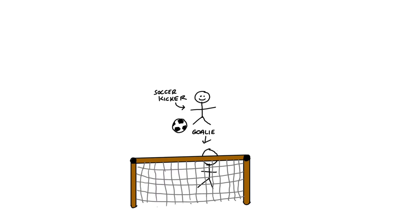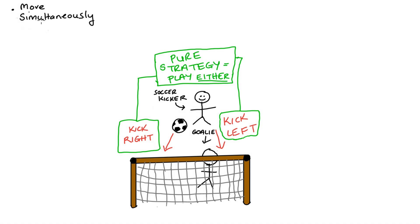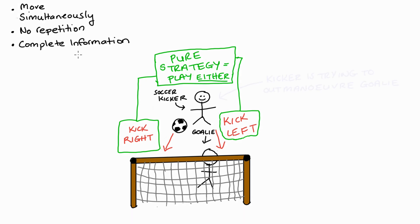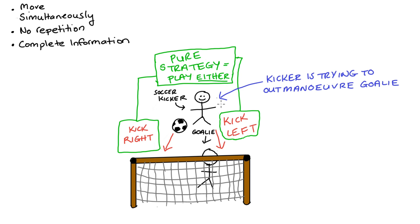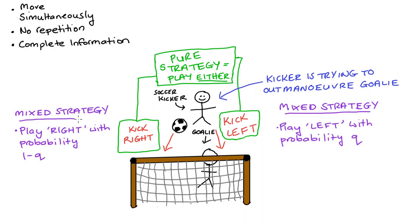To motivate mixed strategies, let's imagine you are a soccer player kicking a ball toward a net where there is a goalie. In a very simple model, we can model our kicker as having two pure strategies: kick to the left or kick to the right. Our players are choosing simultaneously in a one-shot game with complete information. The whole point of the interaction between the kicker and the goalie is that the kicker is trying to outmaneuver the goalie — to kick in such a way that the goalie doesn't expect, so they can get the ball into the net.